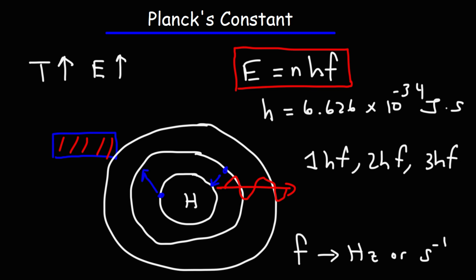So the energy of a photon can only exist in discrete values. It can't take any value. So thus, we could say that energy is quantized.